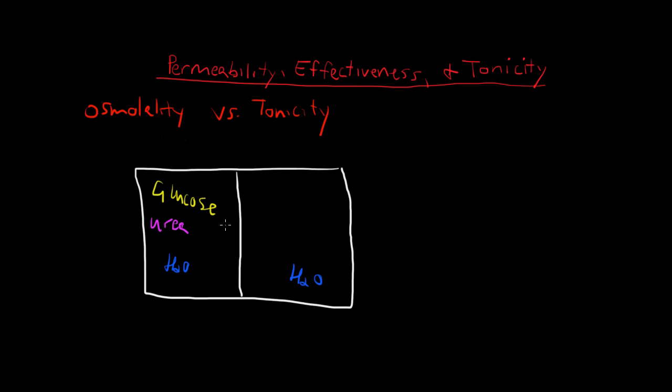So can you see that osmolality on this side only deals with how much glucose and urea there are in the solution? And tonicity deals with only the glucose because urea can pass through it as an ineffective osmolyte. So tonicity is only dealing with the impermeant solute. So we would say this cell is hypertonic.